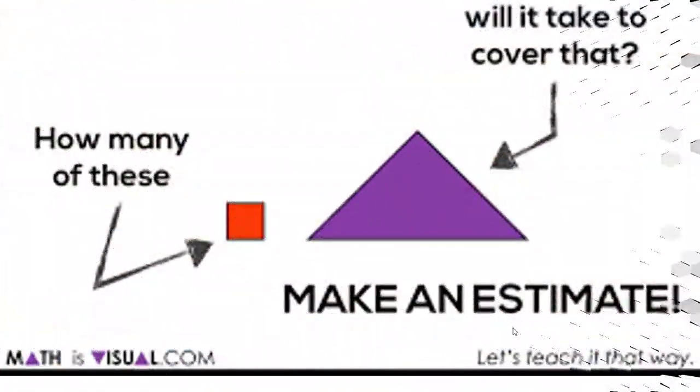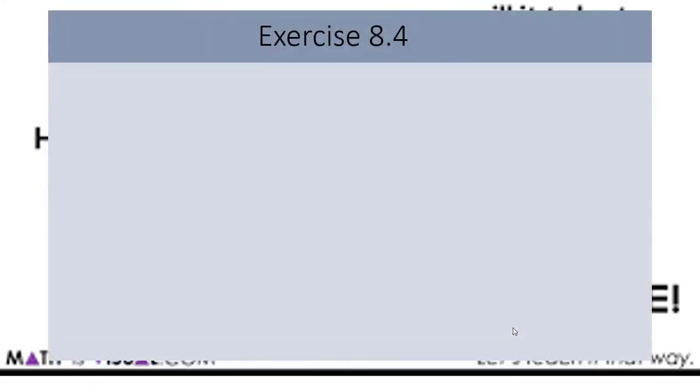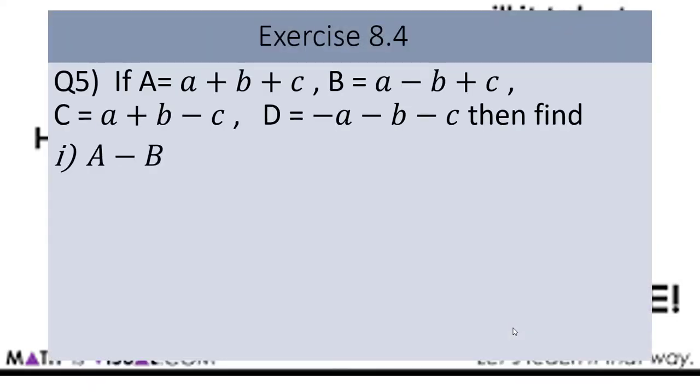Now we will discuss Exercise 8.4, Question Number 5. If A equals a plus b plus c, B equals a minus b plus c, C equals a plus b minus c, D equals minus a minus b minus c. Then our first part: we have to find A minus B.